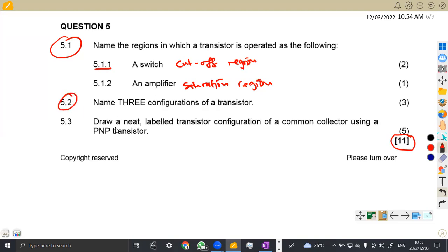The 5.2 is now name three configurations of a transistor. What are the configurations, guys? You must be able to at least study this theory part so that you can be able to attempt these questions. They are direct questions, but they actually need you to work on more revisions. So 5.2, we actually have...